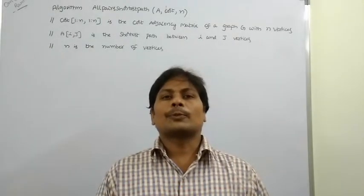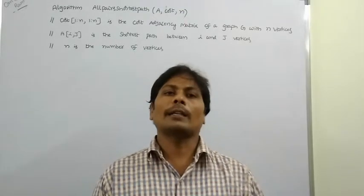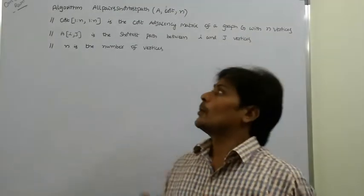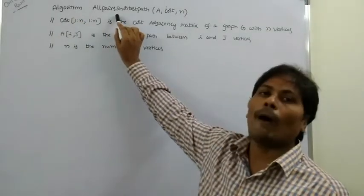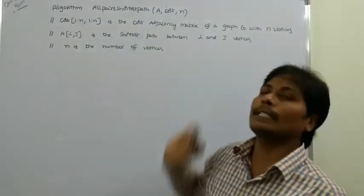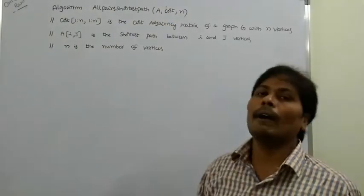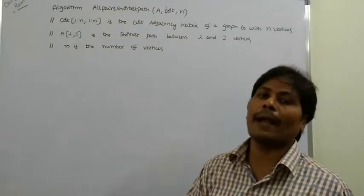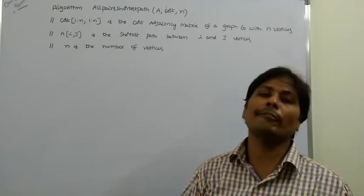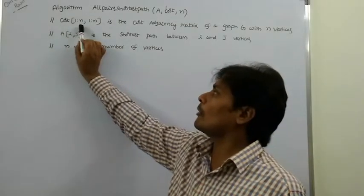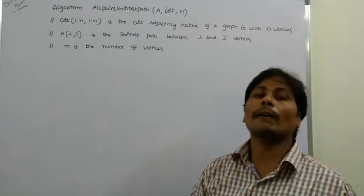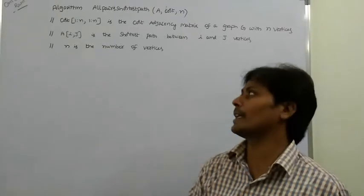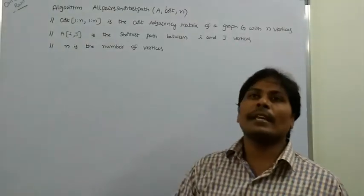Good morning friends. Today we are discussing the algorithm for the All Pairs Shortest Path problem. The algorithm takes three parameters: A is the adjacency matrix, cost is the cost of the adjacency matrix, and n is the number of vertices. Cost[1 to n, 1 to n] is the cost of the adjacency matrix with n vertices in the given graph.